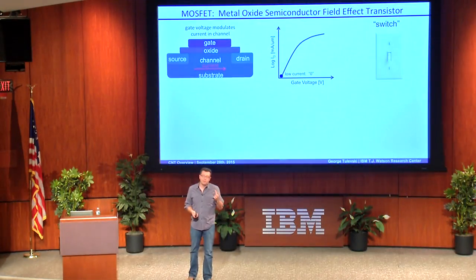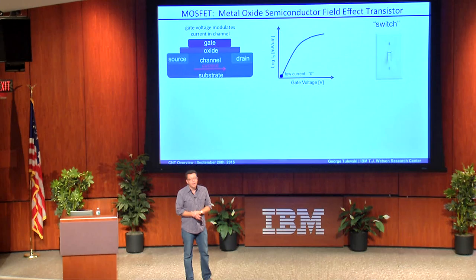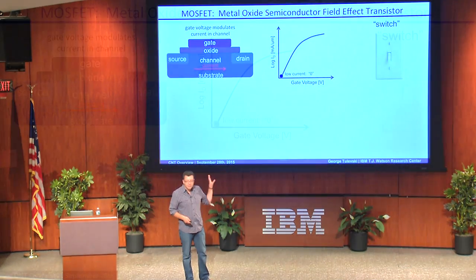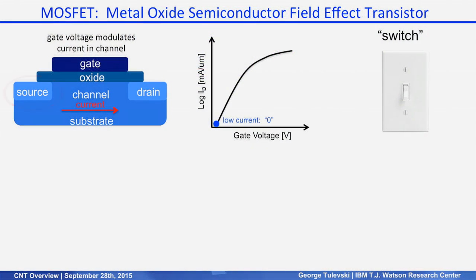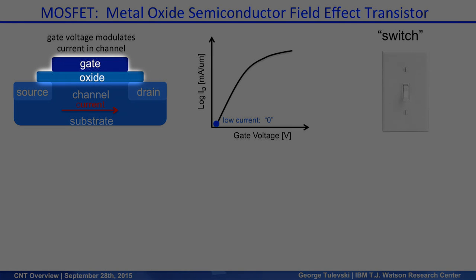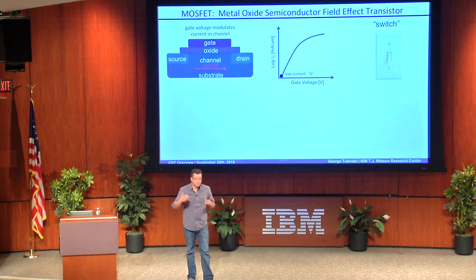I'll tell you how far we've come, what the current status is, and what needs to be done to make that happen. The heart of digital logic is the MOSFET, so let me tell you a bit about how it works. On the top left you see an actual diagram of a MOSFET — we have a source, a drain, and a channel, so current flows from the source to the drain. There's an oxide and a gate on top.